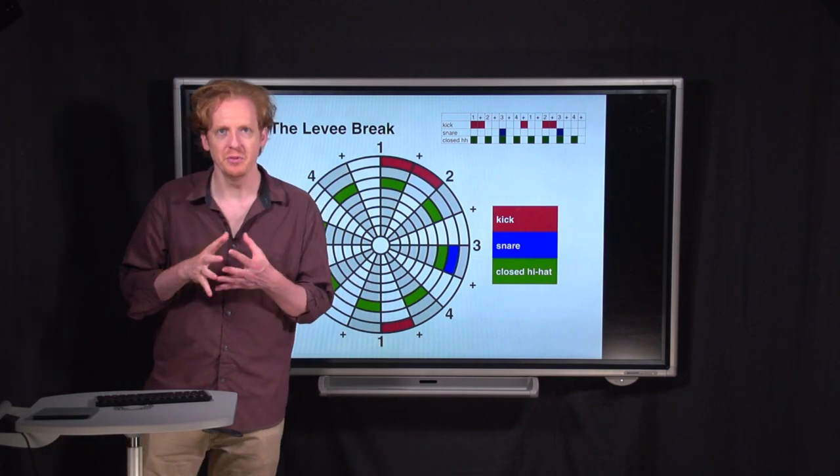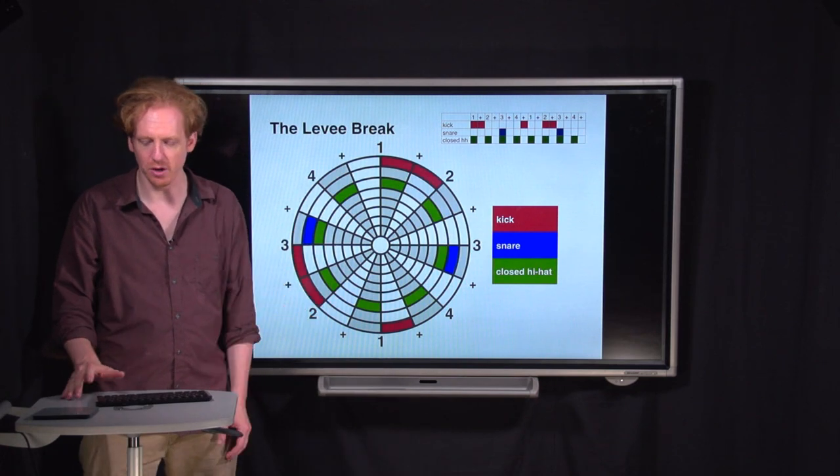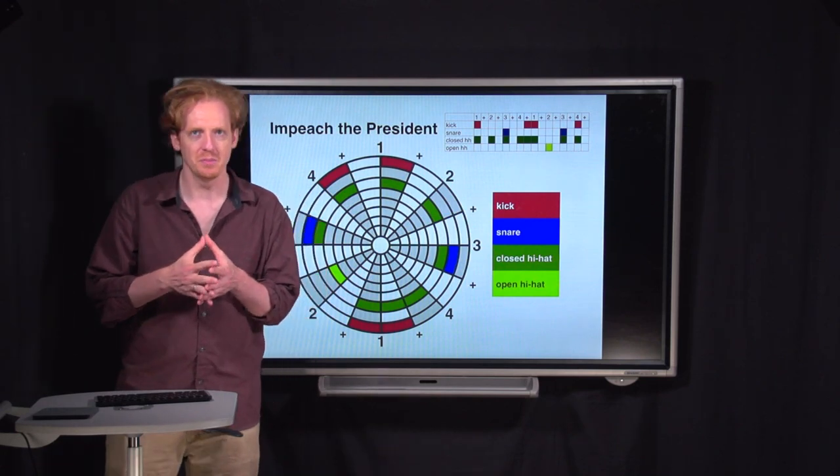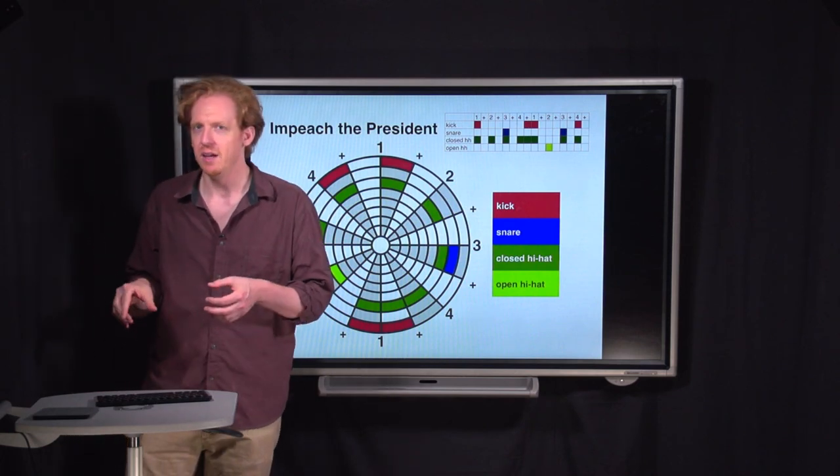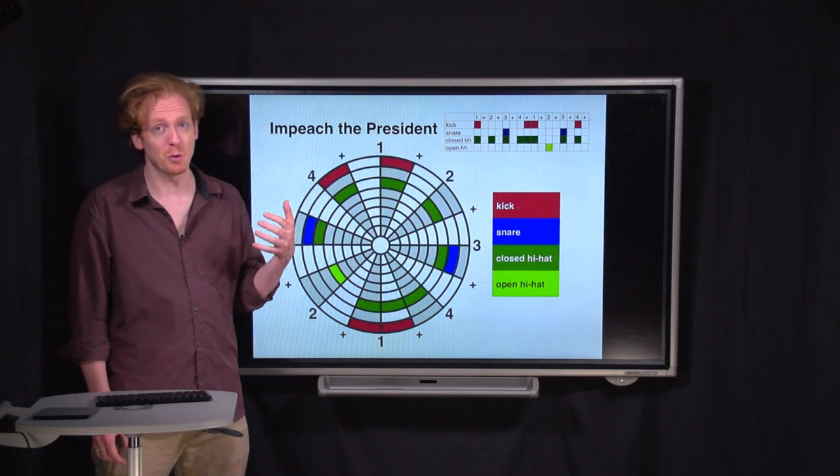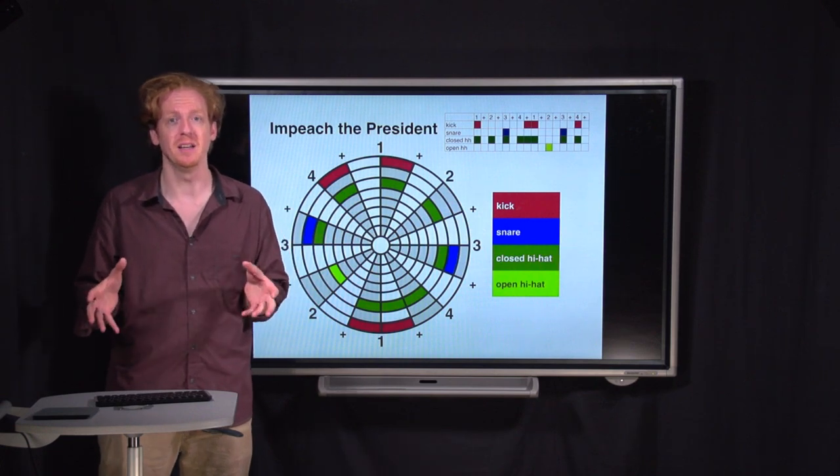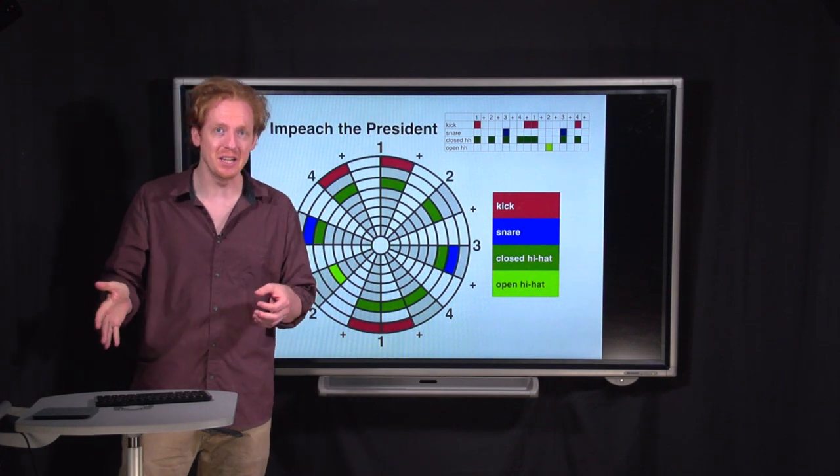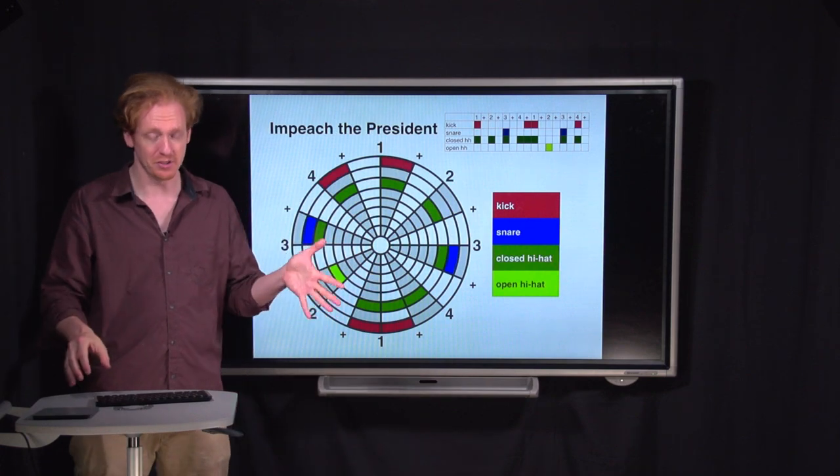All right, from rock, we're gonna start moving into funk and hip-hop, and you're gonna see more and more syncopation as we go. This beat is called Impeach the President. It comes from the first few seconds of the song by the same name by a group called the Honey Drippers. Not a very well-known group, not a very well-known song, but you have definitely heard this beat. According to the website whosampled.com, it's the most commonly sampled beat in hip-hop history. It's used on at least one commercial recording every year since 1987, and most years like dozens or hundreds of recordings. So let's listen to it.